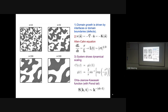The structure factor is what you measure when you shine a beam of light or neutrons on a model system - it's the Fourier transform of the correlation function. The consequence of the OJK function is that at large wave vectors the structure factor decays as a power law singularity: k^(-(d+1)) where d is the dimensionality.